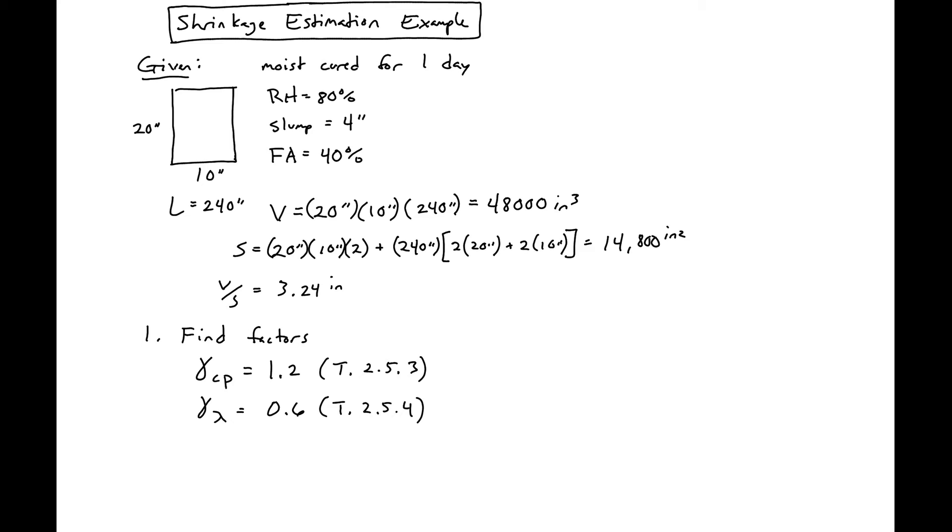Next we can calculate our volume to surface area ratio factor using the equation: 1.2 times e to the negative 0.12 times 3.24. Running the numbers, we get 0.813.